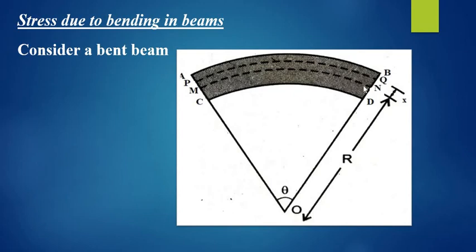MN is the neutral axis. When the bending beam forms an arc of a circle, the radius of the circle is R. This arc length subtends an angle theta.